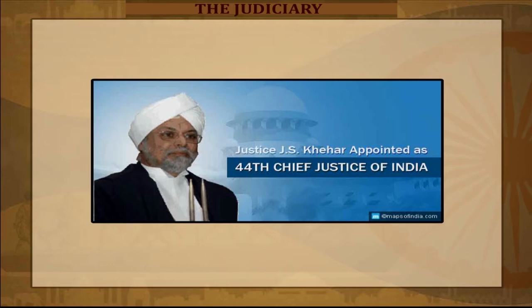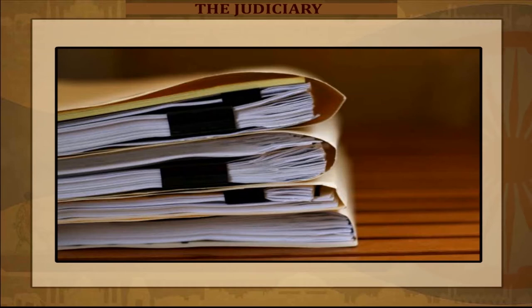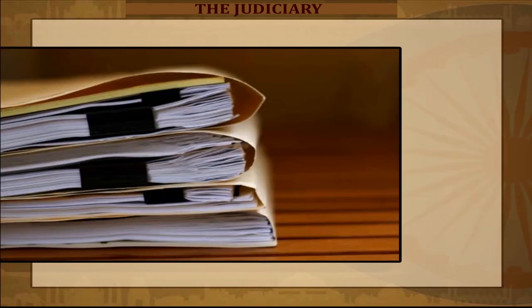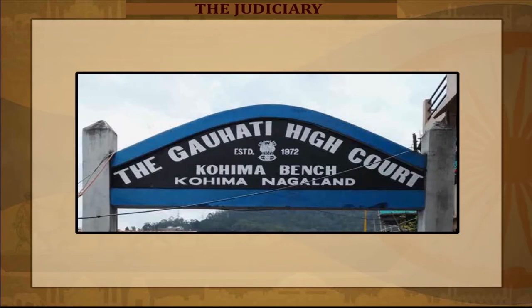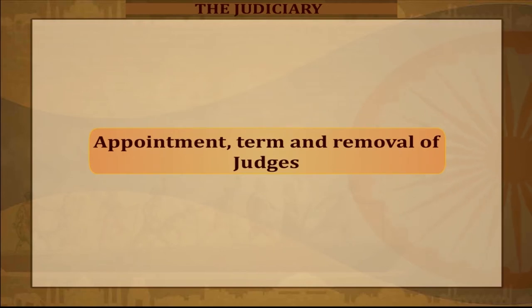Composition: each High Court varies in composition depending on the size of the state where it is located. All High Courts are headed by a Chief Justice. The number of judges in a court is decided by dividing the average institution of main cases during the last five years by the national average, or the average rate of disposal of main cases per judge per year in that year, whichever is higher. Some large states have one or more permanent benches of the High Court for speedy justice, and for convenience in remote and hilly areas, the High Courts have circuit benches that sit seasonally in different areas of the state.